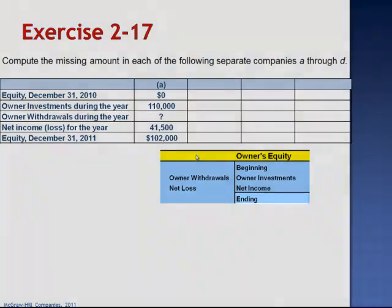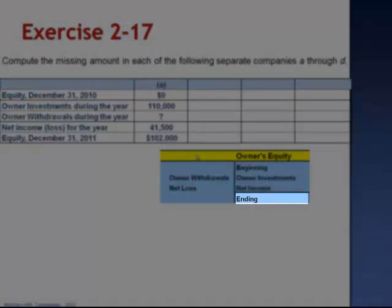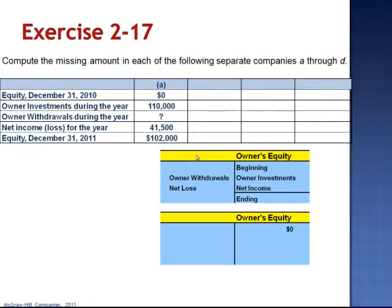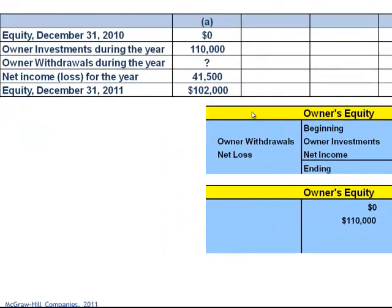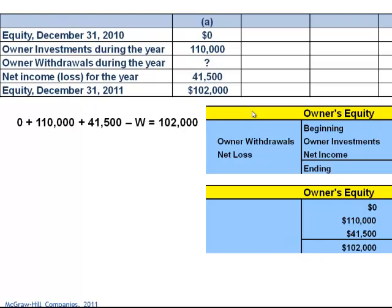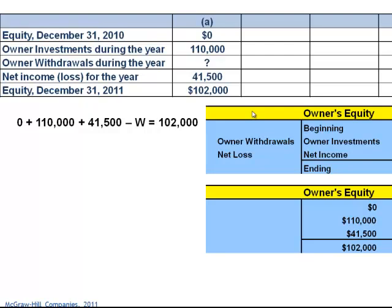Remember, equity sits on the right-hand side of the equation and has a normal credit balance. The beginning balance is zero. We know the owner invested $110,000, and we know that the company had net income, which means they couldn't have had a net loss. The ending balance is $102,000. So we need to solve for the withdrawals: 0 plus $110,000 plus $41,500 minus the withdrawals equals $102,000.